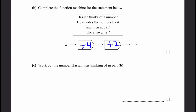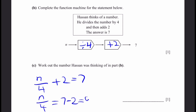Work out the number that Hassan was thinking of in part b. n divided by 4 plus 2 equals 7. So n divided by 4 equals 7 minus 2, which equals 5. Therefore n equals 5 times 4, which is equal to 20.